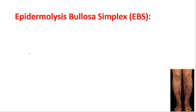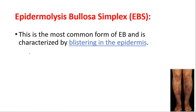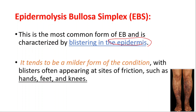Epidermolysis bullosa simplex is the most common form and is characterized by blistering in the epidermis, which is the outer layer. It tends to be a milder form, with blisters often appearing at sites of friction like the hands, feet, and knees.